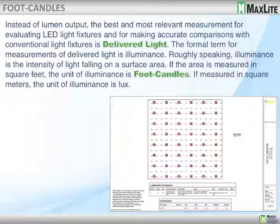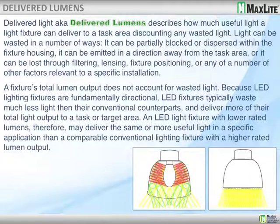Illuminance is the intensity of light falling on a surface area. If the area is measured in square feet, the unit of illuminance is known as a foot candle. If measured in square meters, the unit is known as lux. Delivered lumens describe how much useful light a fixture can deliver to a task area — it can be partially blocked or dispersed within a fixture housing, and lost through filtering, lensing, fixture positioning, or other installation factors. A fixture's total lumen output does not account for wasted light. Because LED fixtures are fundamentally directional, they typically waste much less light, allowing lower wattage to deliver lumens more efficiently.